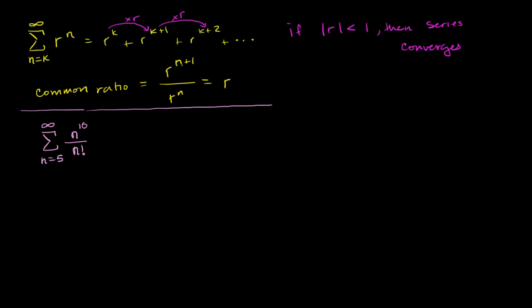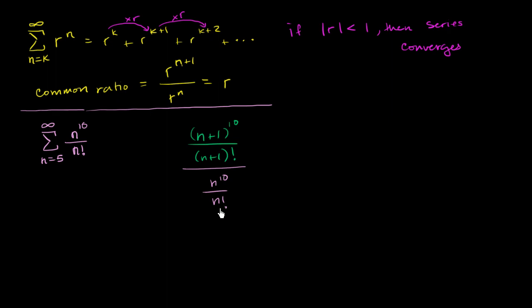Let's see if we can come up with a common ratio. Let's take the n plus one-th term — which is n plus one to the tenth power over n plus one factorial — and divide that by the n-th term, which is n to the tenth over n factorial. Dividing by a fraction is equivalent to multiplying by its reciprocal, so we multiply by n factorial over n to the tenth. All I'm trying to do is see if there's some type of common ratio.